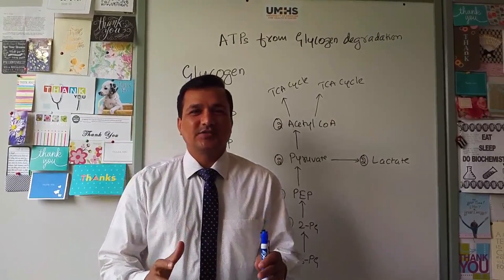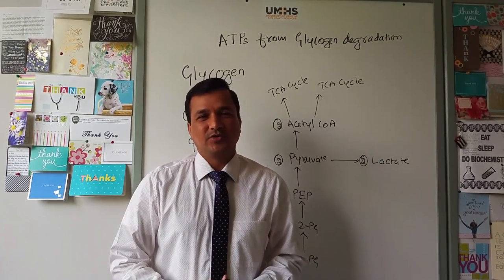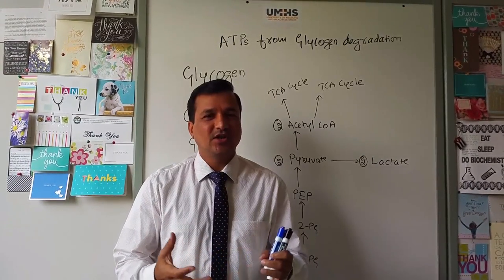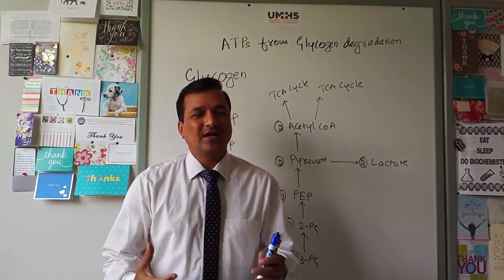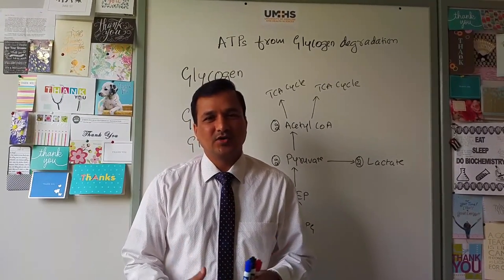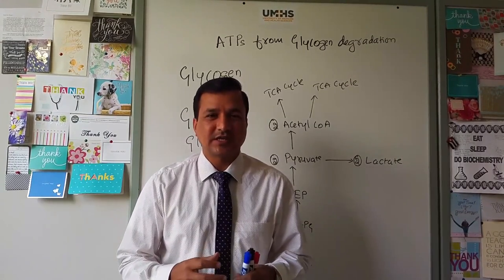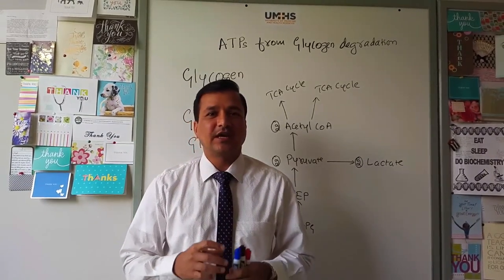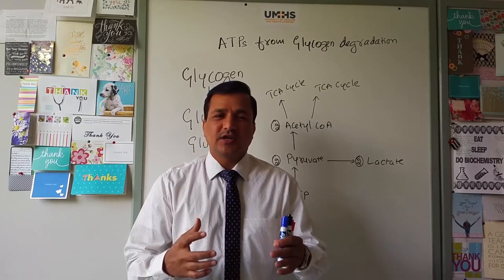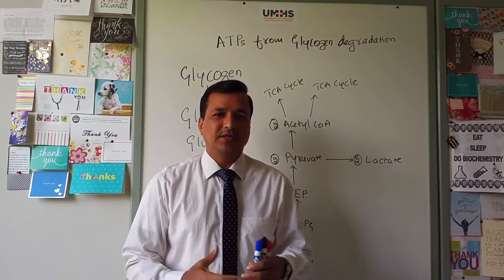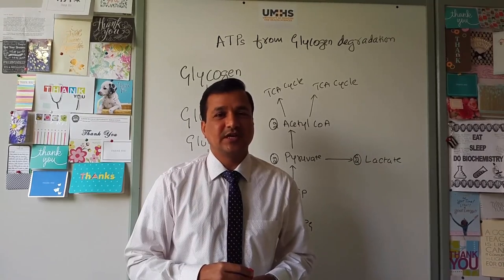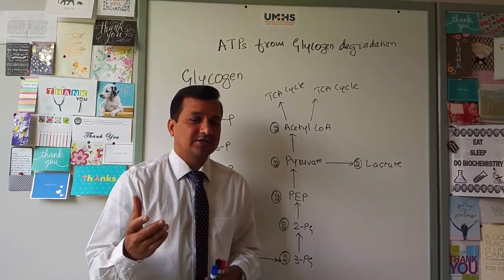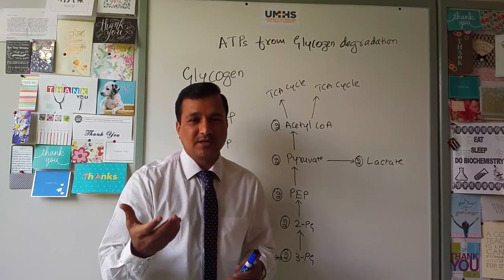In this video I will be explaining how many ATPs you are going to get on glycogen degradation. Glycogen stored in the liver is for blood glucose maintenance, whereas glycogen stored in skeletal muscle and other tissues is for the energy needs of that tissue. We are going to calculate how many ATPs you get from glycogen in tissues other than the liver, such as during skeletal muscle activity.